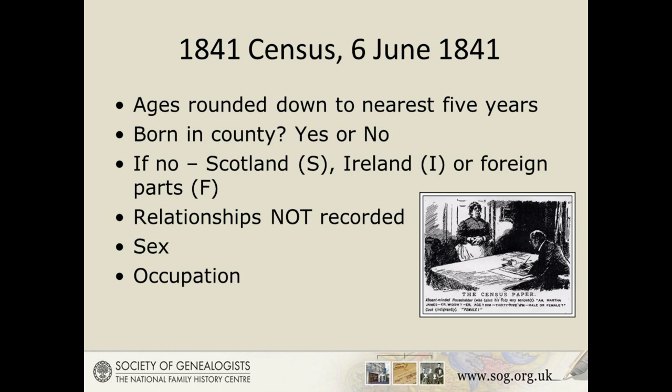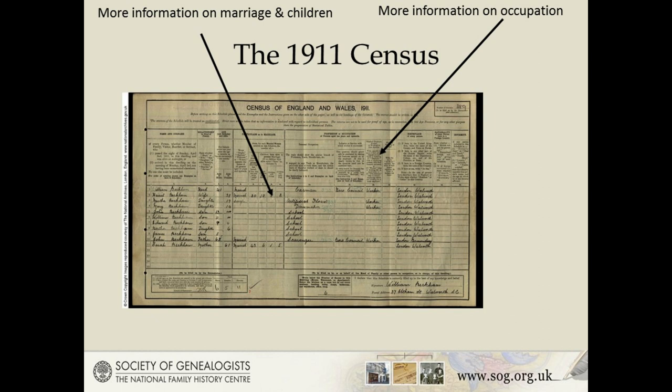The 1841 census looks different and has less information. It was taken in June rather than April. Ages are usually rounded down to the nearest five years for adults over 15, but enumerators didn't always follow that instruction. Place of birth is defined only as whether or not in the county of enumeration, and if not, only whether it's Scotland (S), Ireland (I), or foreign parts (F). Addresses may be no more than a street or even a village name, and often only one forename is recorded. The 1911 census is the first that retains the household schedules rather than having them copied into enumeration books, so you could be looking at your ancestors' own handwriting.